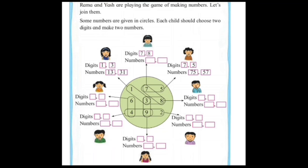The second girl has chosen the numbers 7 and 8, but she has not made any numbers. Let's help her. So she can make the numbers 78 and 87 from that. Similarly, four students have to choose the numbers and accordingly they have to make the two digit numbers.